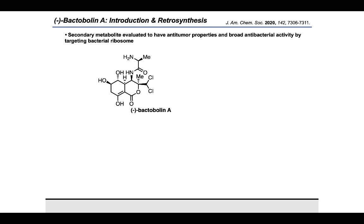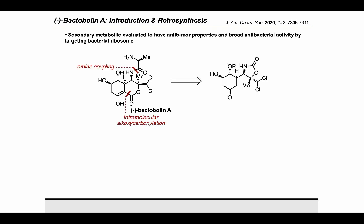In their retrosynthetic analysis of this target, the authors imagined that it might be possible to disconnect using an amide coupling as well as an intramolecular alkoxycarbonylation. With these simplifications, they suggest that Bactobolin A could be accessed from this bicyclic precursor, which might be viewed as the product of an intramolecular C–H amination.